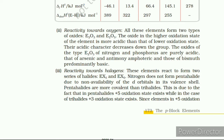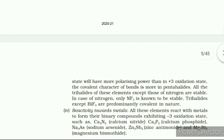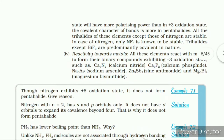Dinitrogen can also be obtained by thermal decomposition of ammonium dichromate. Very pure nitrogen can be obtained by thermal decomposition of sodium and barium azide. Properties: Dinitrogen is a colorless, odorless, tasteless, and non-toxic gas. The nitrogen atom has two stable isotopes, ¹⁴N and ¹⁵N. It has very low solubility in water and low freezing and boiling points.